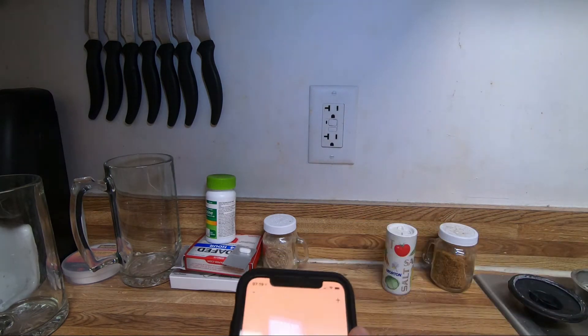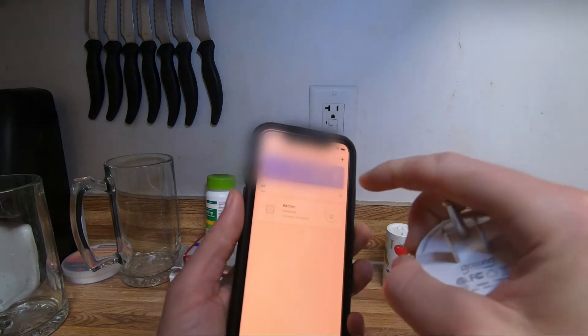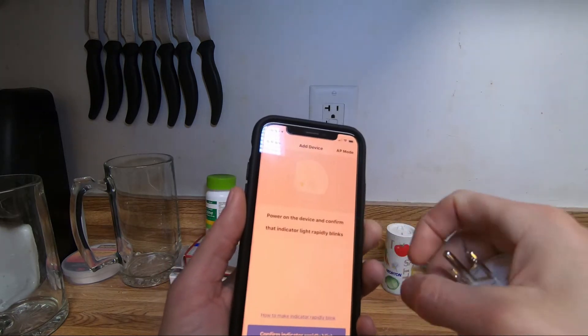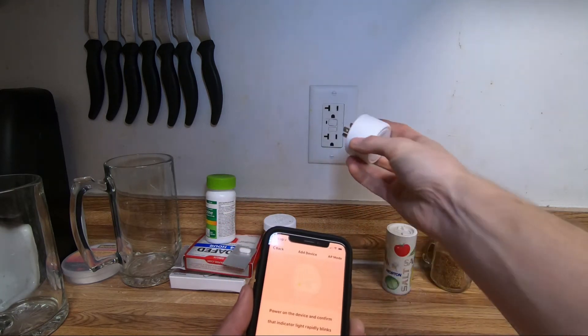I'm going to open up the Smart Life app. We're going to be adding a device, so hit the plus sign. Click on electrical outlet. Power on device, confirm indicator rapidly blinks. So we're going to go ahead and plug it in.